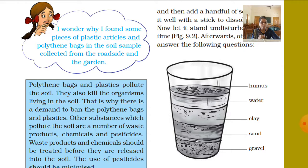When we collected soil from different places, we found that polythene bags and plastics are also present in the soil. They remain as pollutants and kill the organisms living in the soil. That is why there is a demand to ban polythene bags and plastics. Other substances which pollute the soil are waste products, chemicals, and pesticides.